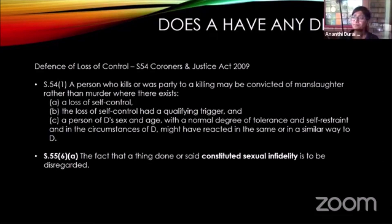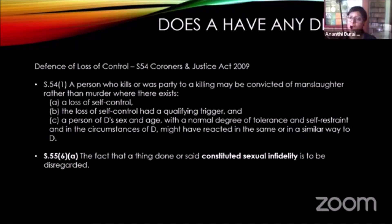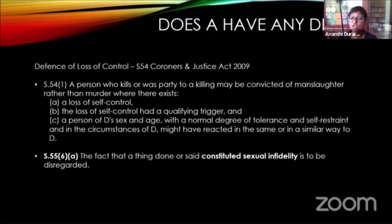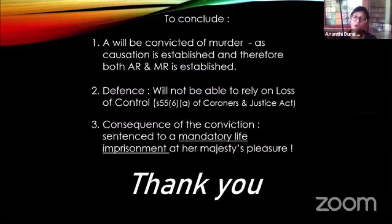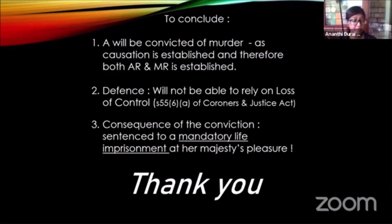There is actually a very good reason why the law says this today, but I'm running out of time. When you register for the programme and we actually study the Coroners and Justice Act, we will look at the history of the defence — why sexual infidelity is something that cannot be taken into consideration, when it was something that used to be taken into consideration very readily. So in this particular instance, does A have a defence of loss of control? Unfortunately, no. A will be convicted of murder as the causation element is satisfied, and so the actus reus and mens rea are satisfied. There are no defences — he cannot rely on loss of control because of section 55 subsection 6(a).